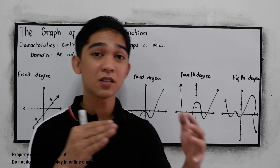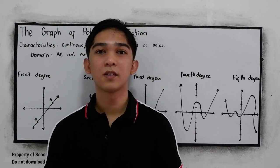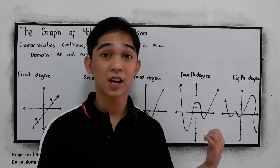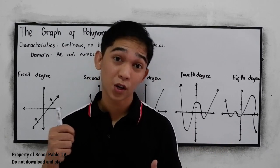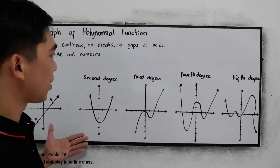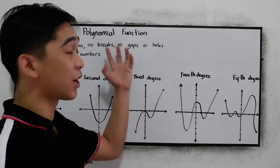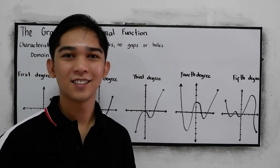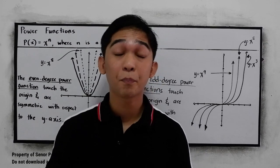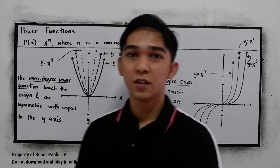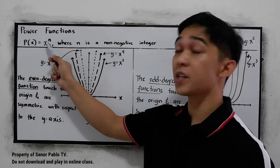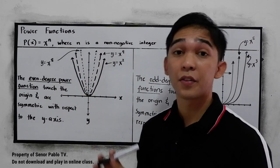In our further discussions, we'll discuss power functions. We're going to discuss more about the graph of this polynomial function. So we're going to expect these different kinds of graphs in our polynomial function. And under the graph of polynomial functions, we have the power function. It is written in the form P(x) = x^n, where n is a non-negative integer.